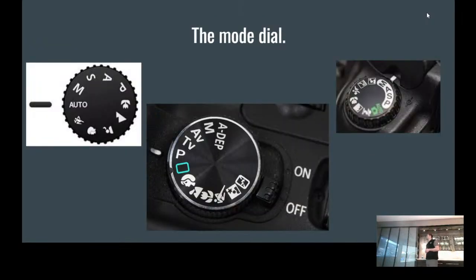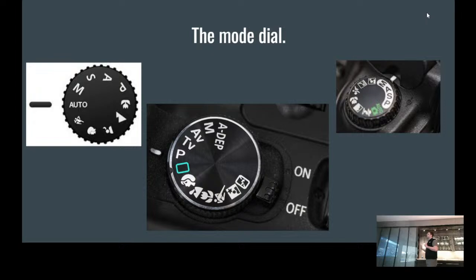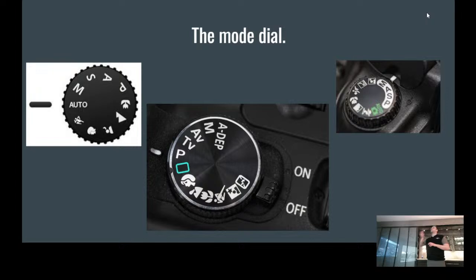What we're going to dive into now is the mode dial. I look at the mode dial as your gear shift in a car — your way to go into manual, reverse, automatic, shifting different gears, going into neutral. The camera is no different: manual control, aperture priority, shutter priority, etc. That's all available on this mode dial wheel.